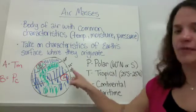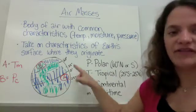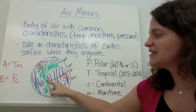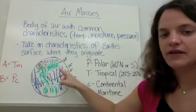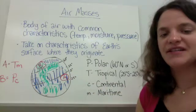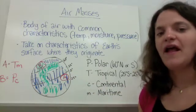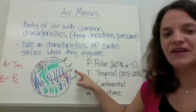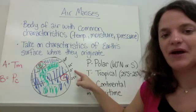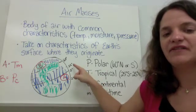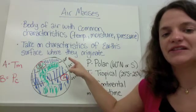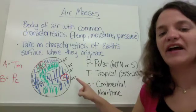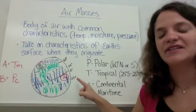Here's an example. We have a drawing of Earth. The green represents the continents, the blue represents the oceans, and we have some latitude markings. So we know 0 degrees latitude is the equator, 25 degrees north, 60 degrees north, and 25 degrees south.